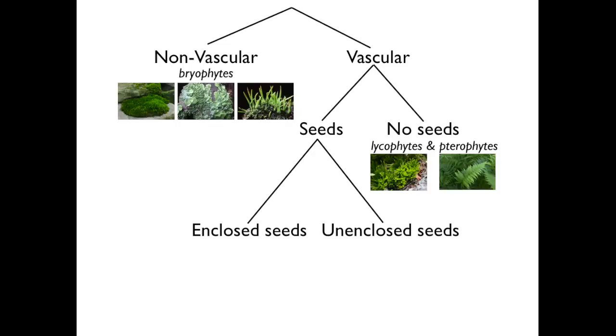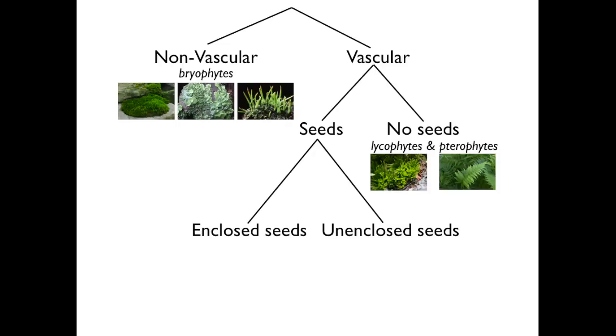Vascular plants with seeds are further divided by whether their seeds are enclosed or unenclosed. Enclosed seeds are enclosed within the ovary. For example, the ovary of an apple tree is an apple, and the seeds are enclosed within the apple.